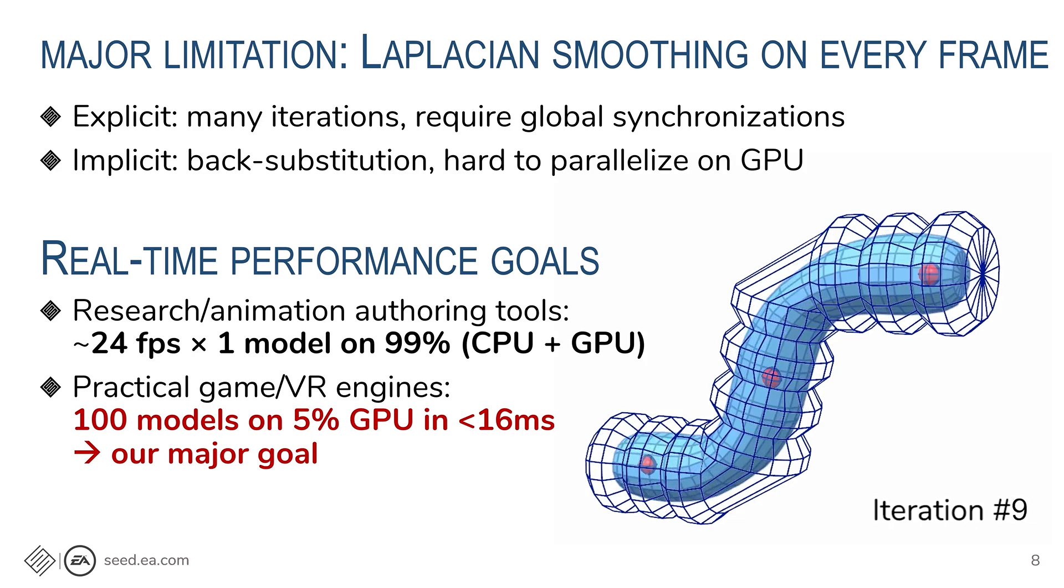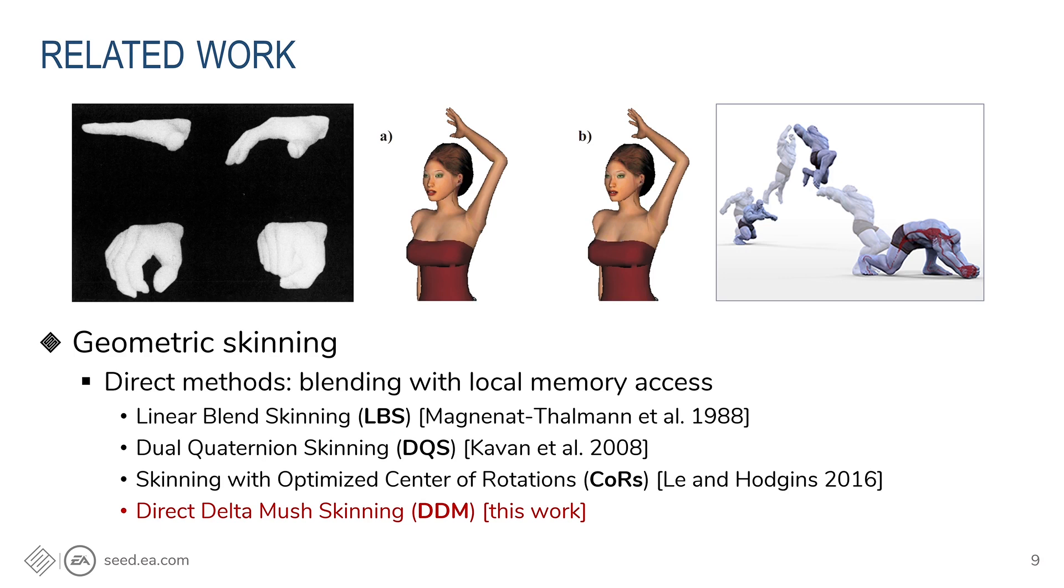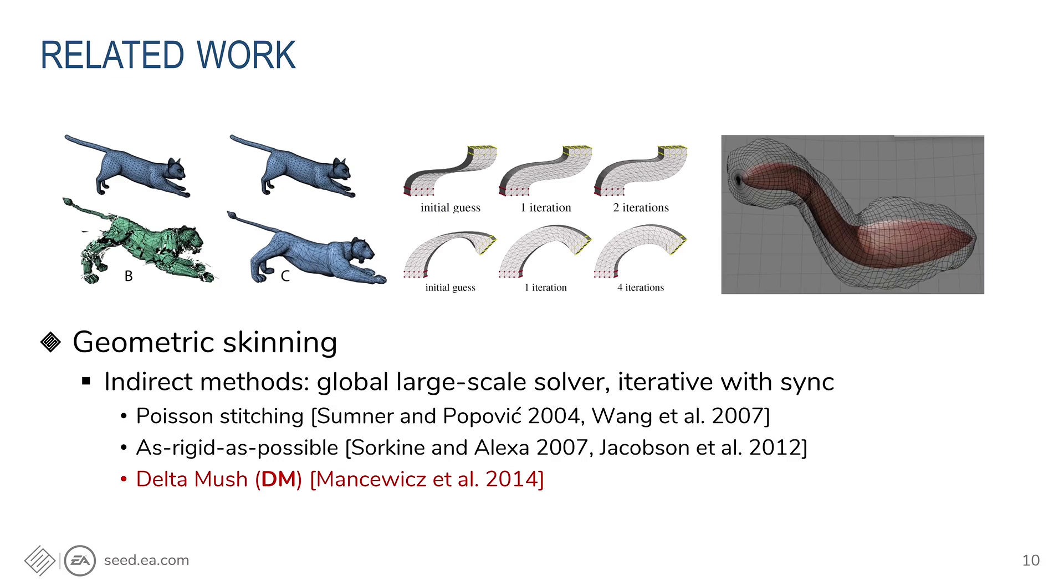And our goal for this project is to make Delta mush a direct skinning method. And here's a quick review of the landscape. Our work shares the similar computing architecture with other direct methods, which typically can compute all vertex transformations in parallel, and the computation on each vertex only needs to access small local memory. This is suitable for implementation on GPU shaders. There are indirect methods that can optimize some global energy terms, so they typically offer higher quality, but the computation costs are also more costly, either with a large-scale linear solver like Poisson stitching, or many iterations and synchronization like as-rigid-as-possible or the original Delta mush.